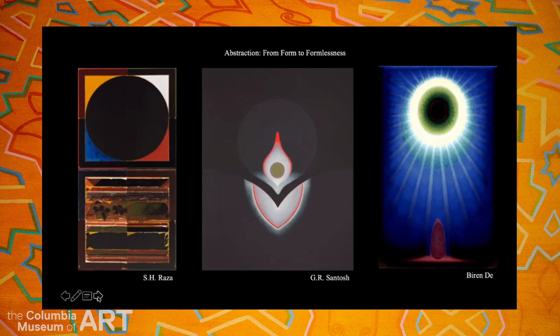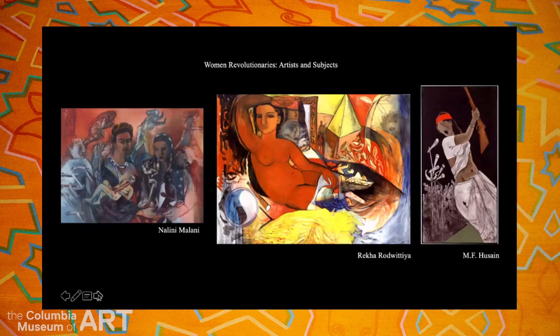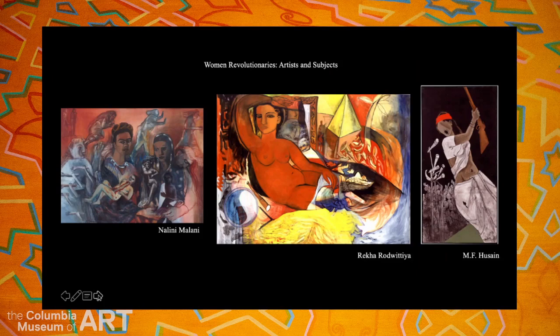Another section looks at women revolutionaries — women as artists and as subjects. Now the women and the female body are essential to classical Indian art; they appear as ornaments all over temples and early Buddhist stupas, often appearing as goddesses, mothers, and consorts. But in modern India, we have women not as peripheral figures but as central to images who have lives and experiences of their own. We pay homage here to women artists like Nalini Malani and Rekha Rodwittiya, who pull from their own experiences of joy, sorrow, sexual freedom, and liberation. And a painting by M.F. Husain on the right of Phoolan Devi, the bandit queen — a woman who really redefined what it meant to be a woman in modern India.